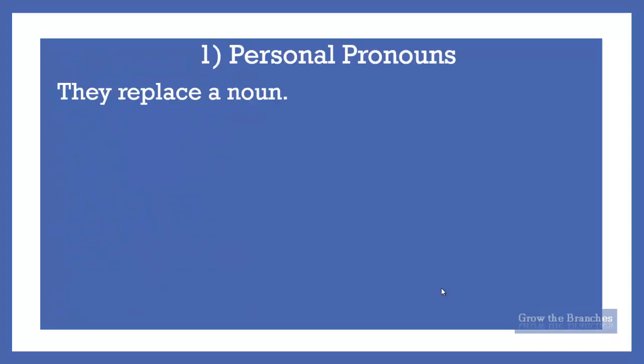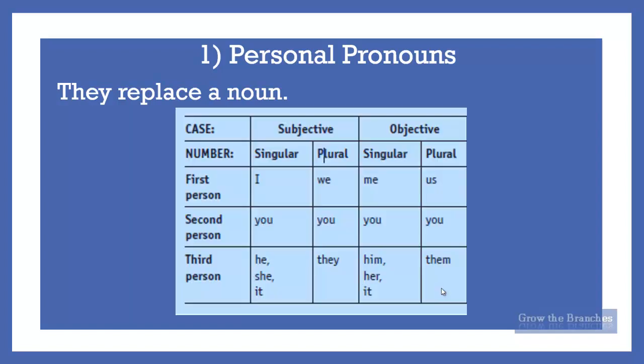A personal pronoun is used instead of a noun or noun phrase primarily. It is connected with a particular person in the grammatical sense. It takes the place of specific nouns in the sentence in order to avoid the repetition of nouns and make an easy flow of sentences. Personal pronouns can refer to people, animals, places, or objects.